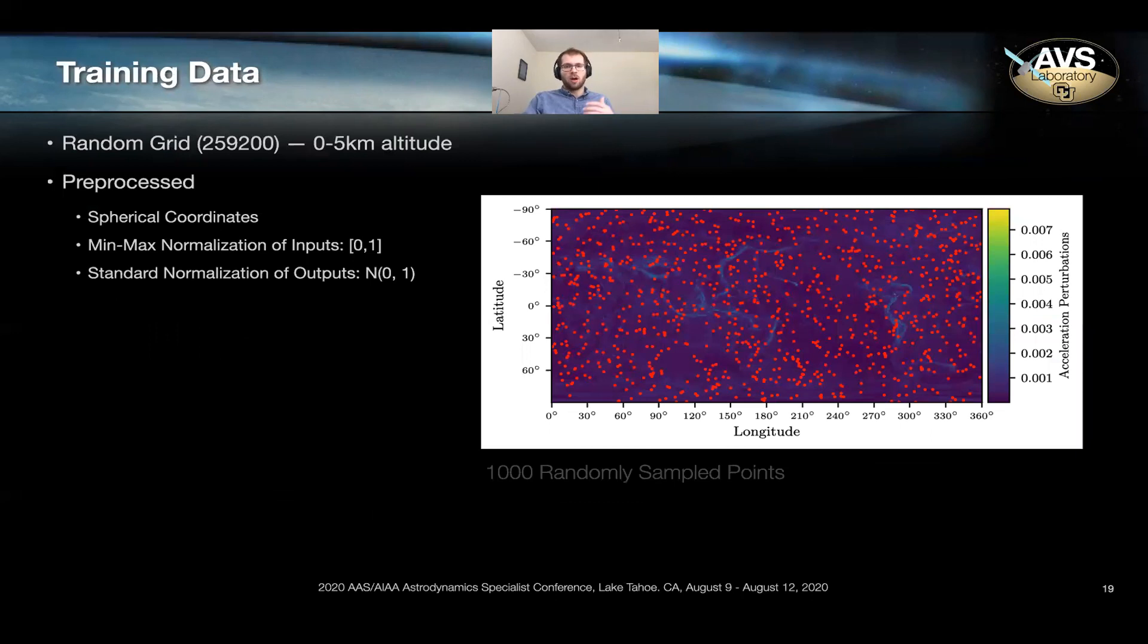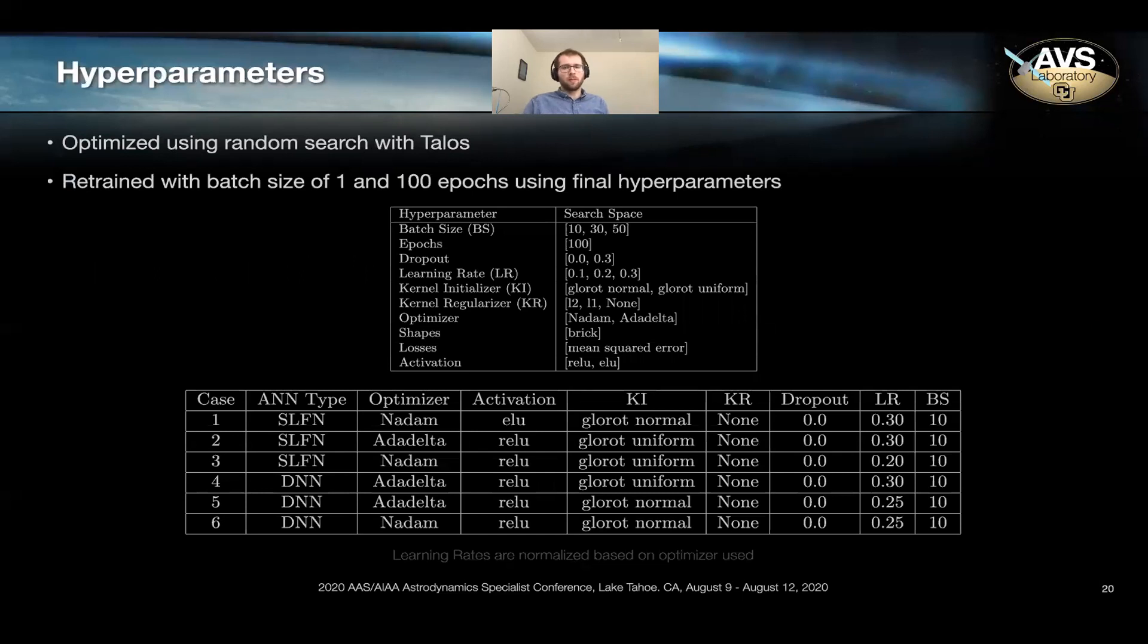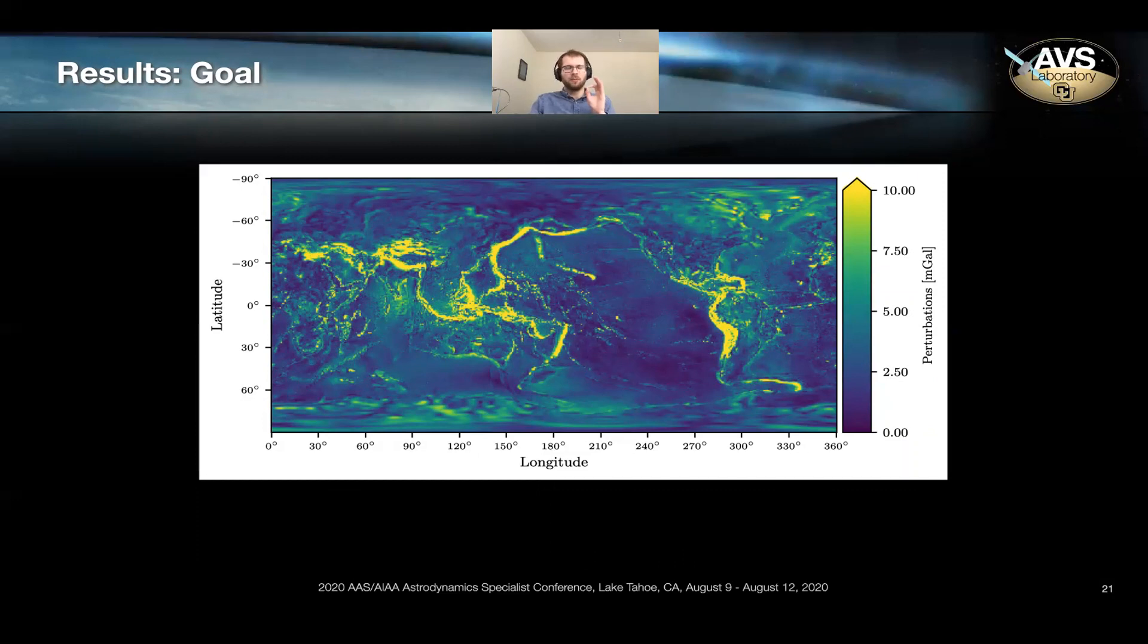So to train the networks, we sample approximately a quarter million points that are spread uniformly from a zero to five kilometer altitude. So it's a relatively tight shell around the Earth. The coordinates are pre-processed to convert from Cartesian to spherical coordinates. We perform a min-max normalization of the inputs and a standard normalization of the outputs. We then perform hyperparameter optimization using Talos. In this case, we use a random search from a user defined hyperparameter space. And we select the most performant hyperparameters to then compete against the spherical harmonic counterparts.